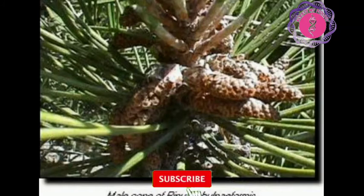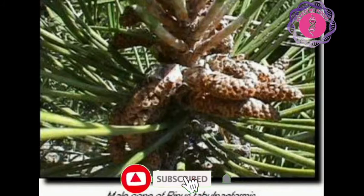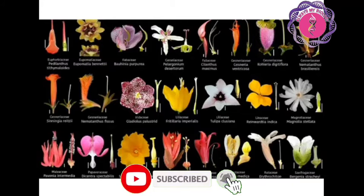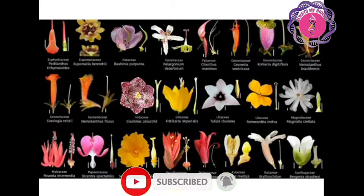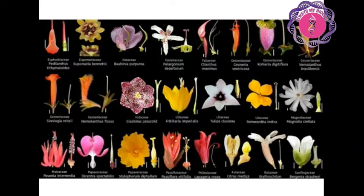If their reproductive organs are hidden, it is called as cryptogams, and if their reproductive organs are visible, it is called as phanerogams.